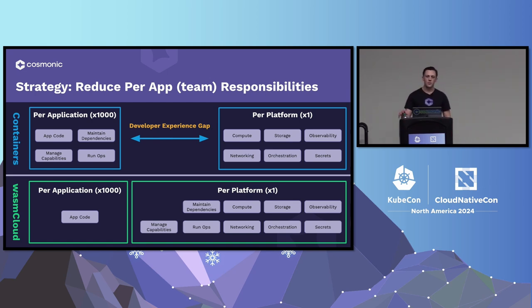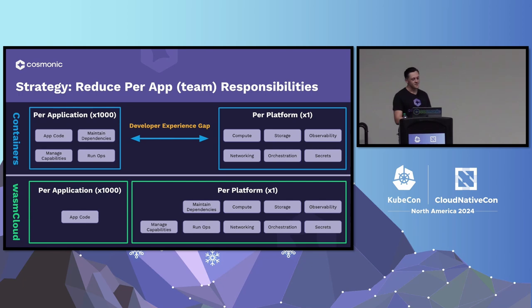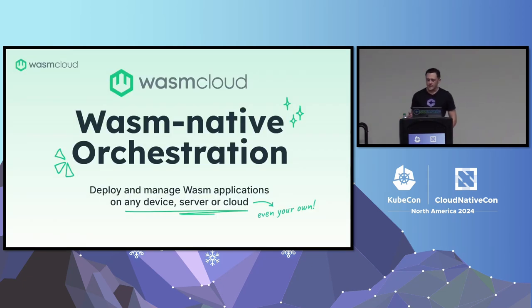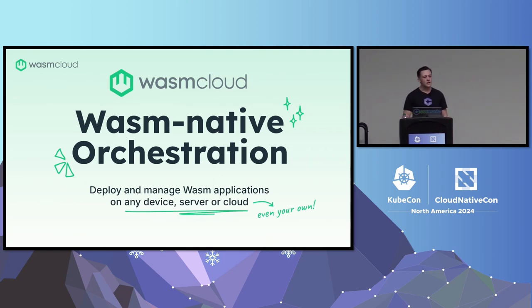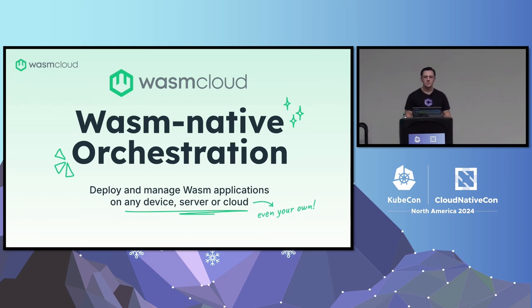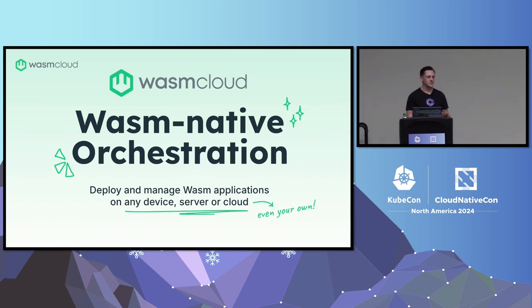We look to abstract the dependencies, the capabilities that make an application work at runtime, and the runtime information — making those part of the platform. That allows platform engineers to maintain the platform while developers maintain their application code, rebuilding and redeploying only when they change their own features. They don't have to do that for their dependencies. We chose WebAssembly as our unit of compute because of its unique status as a deny-by-default, platform-agnostic binary.